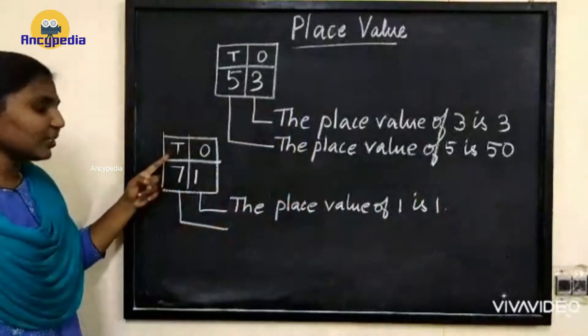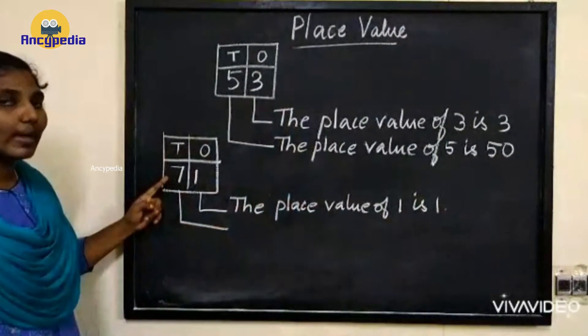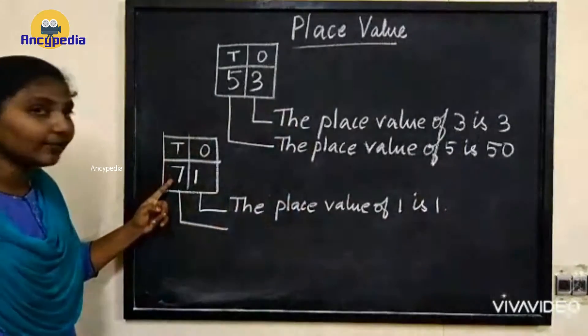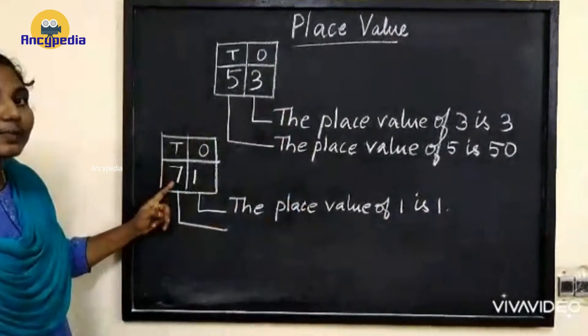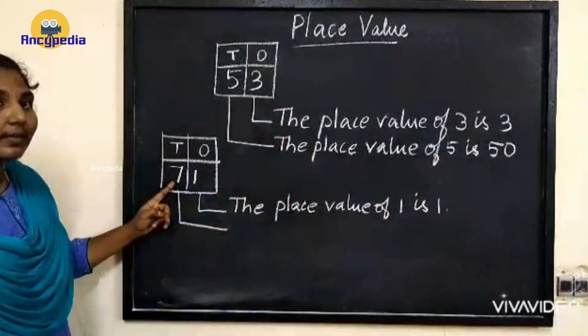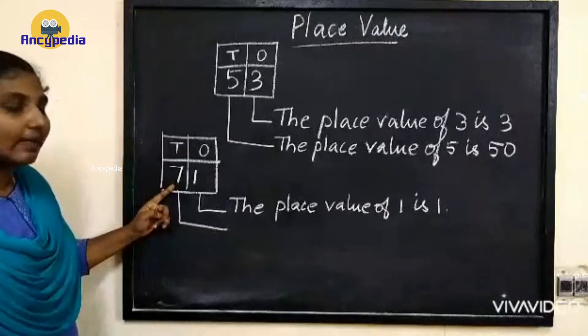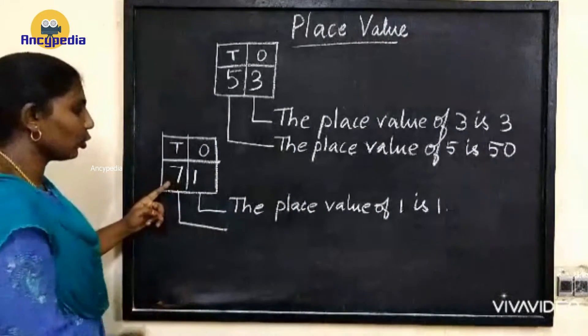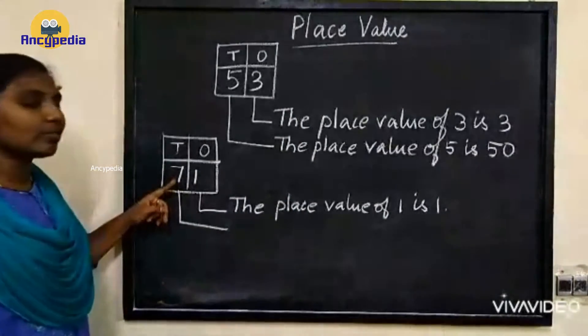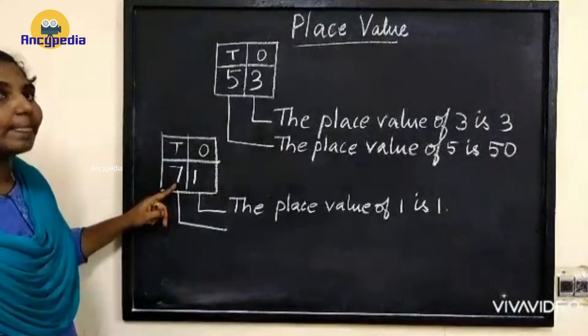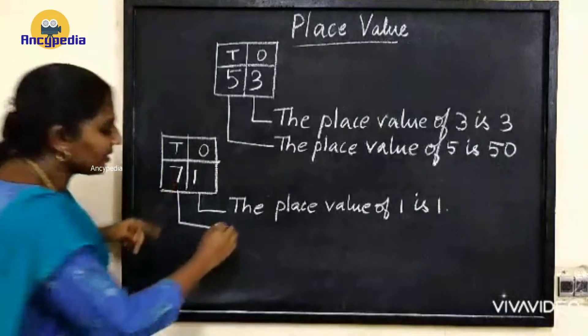In 10's place we have 7. How to write the number 7 in 10's place? We have to write 70. So the place value of 7 is 70.